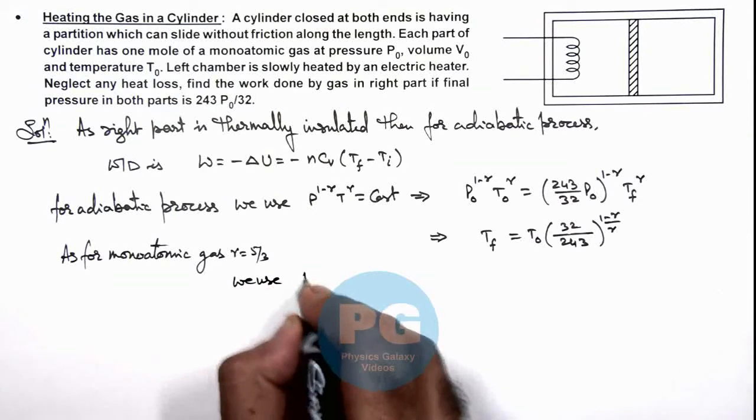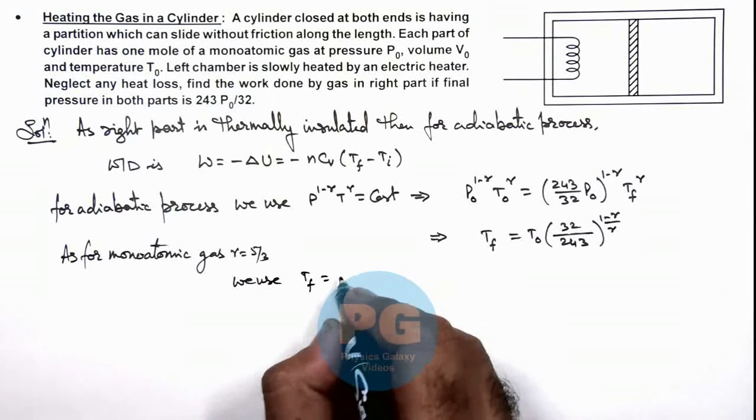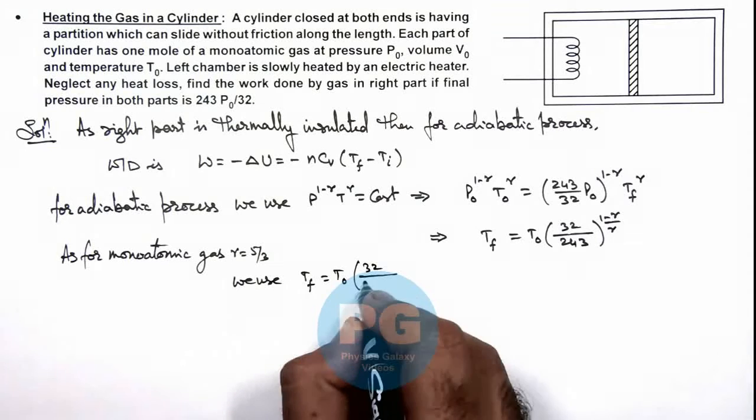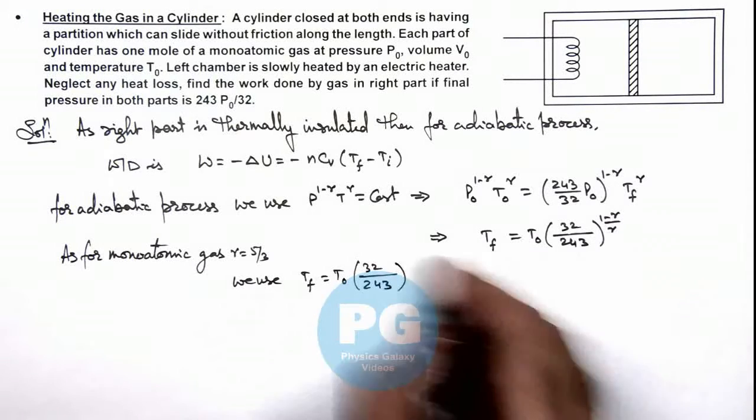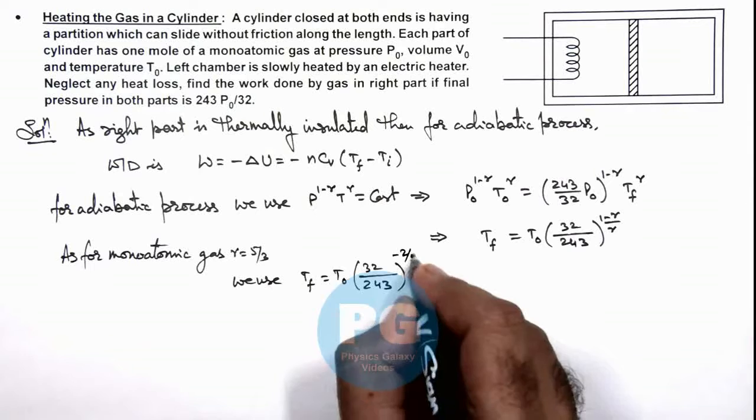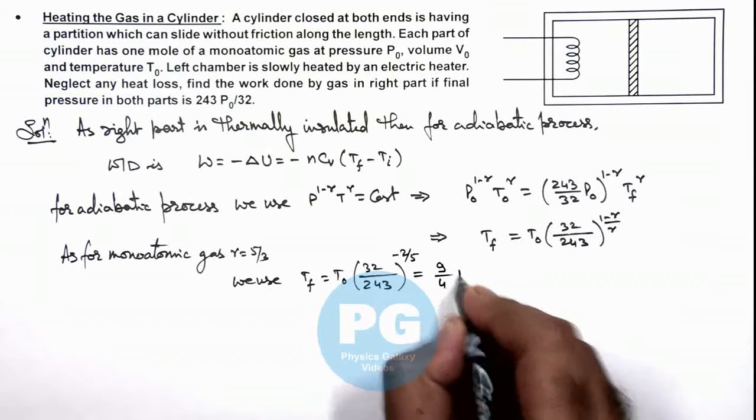We use final temperature is t_not multiplied by (32/243) to power minus 2/5, that is equal to 9/4 t_not.